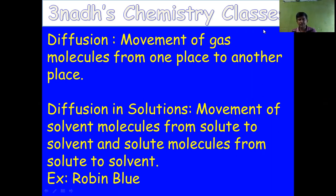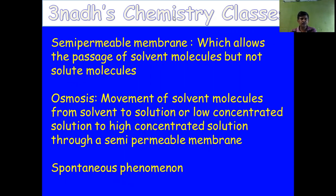We also need to know what a semi-permeable membrane is. A semi-permeable membrane is a membrane which allows the passage of solvent molecules but not solute molecules. It is like a sieve — sieves allow only certain sizes of particles to pass through. Similarly, a semi-permeable membrane allows solvent molecules, which are very small compared to solute particles, to pass through.